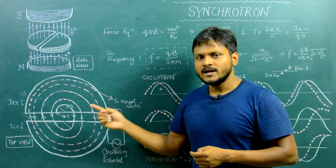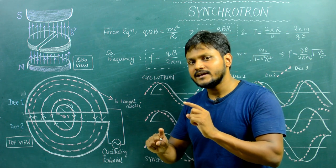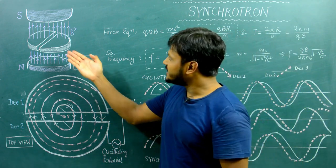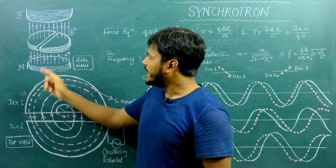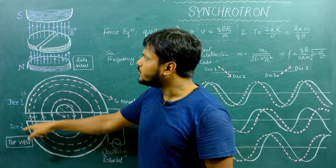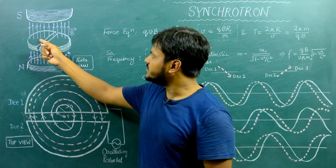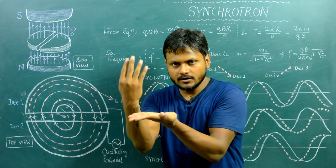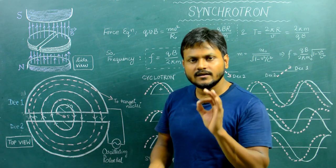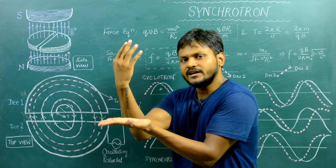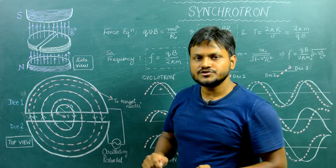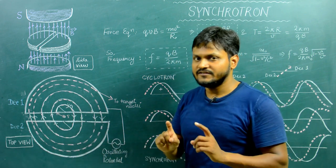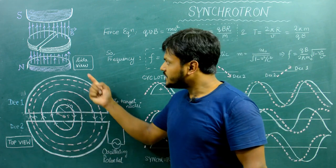To understand the working mechanism of a synchrotron, let's first revise how a cyclotron works and why it stops working at relativistic speeds. A cyclotron is basically a cylinder cut in half: one half is named D1 and the other D2. This is placed perpendicular to a magnetic field. Inside these two half cylinders there is a charged particle moving. When a charged particle moves in a plane and experiences a magnetic field perpendicular to that plane, it executes circular motion.